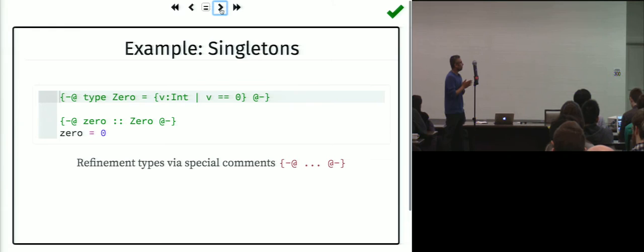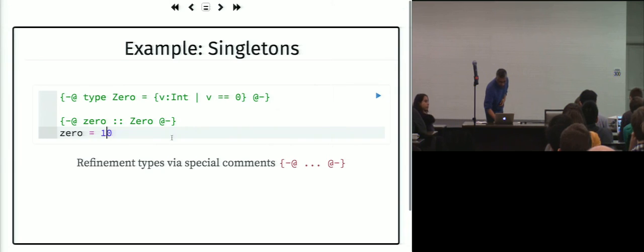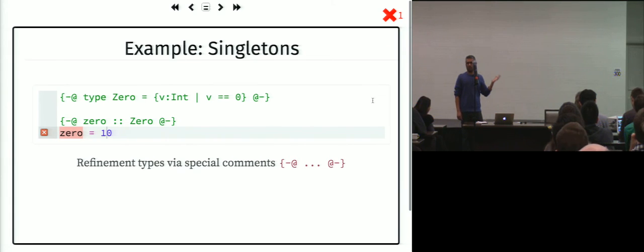Let me show you an example of a really simple refinement type. I'm going to define a type called zero, which is the integer's value such that the value equals zero. What I want this type to describe is the set of values that satisfy that predicate, which is exactly the number zero. If I change this to ten, it will say no, ten does not type check.